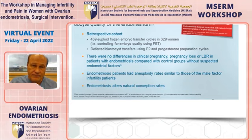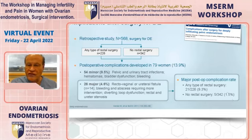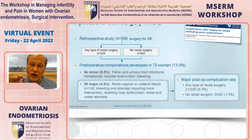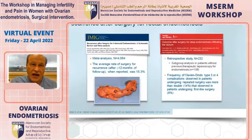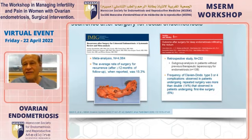Regarding complications, if deep endometriosis requires bowel resection, the complication rate is 9.3 percent compared to 1.5 percent without bowel surgery. There are also minor complications such as bladder dysfunction, but major postoperative complications must be discussed with the patient. If surgery is for pain, the patient may accept this risk; if for infertility, she may prefer IVF. A meta-analysis of 4,000 patients showed an average recurrence rate after surgery of 15 percent, and IVF does not influence recurrence rate either way.